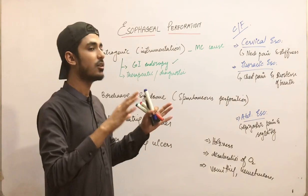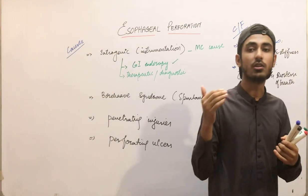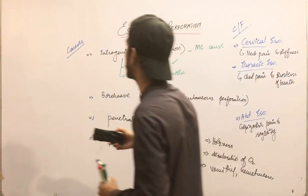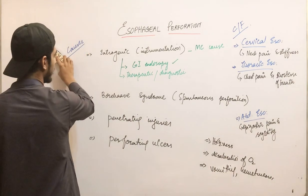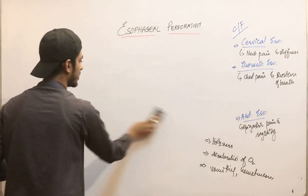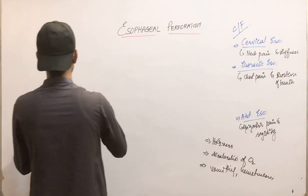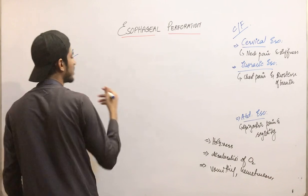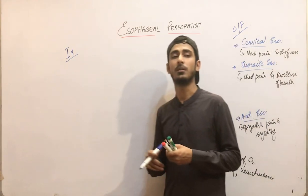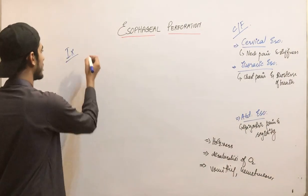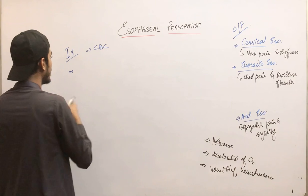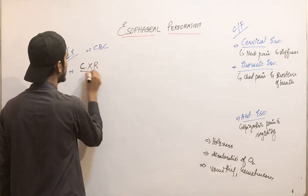After making a clinical diagnosis, you need to confirm it with investigations. The baseline investigation is CBC, where WBCs are increased, and serum amylase will also be increased. The best initial investigation is the chest X-ray.